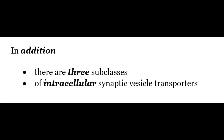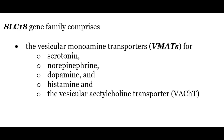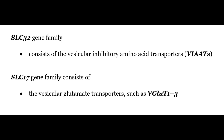In addition to these two, there are three subclasses of intracellular synaptic vesicle transporters. The SLC18 gene family comprises vesicular monoamine transporters, also known as VMATs, for serotonin, norepinephrine, dopamine, histamine, and the vesicular transporters for acetylcholine. The SLC32 gene family consists of vesicular inhibitory amino acid transporters known as VIATs. And the SLC17 gene family consists of vesicular glutamate transporters such as VGLUTs 1, 2, and 3.